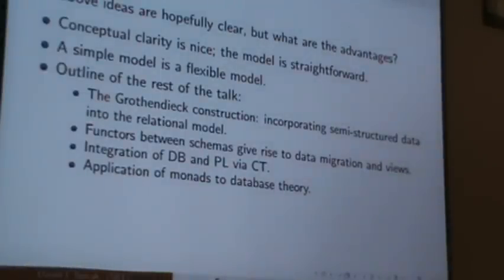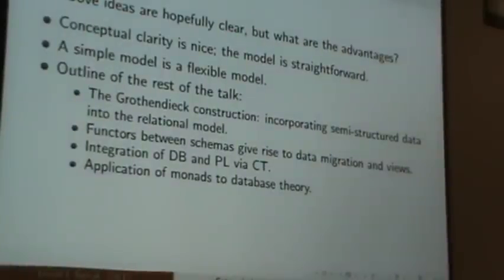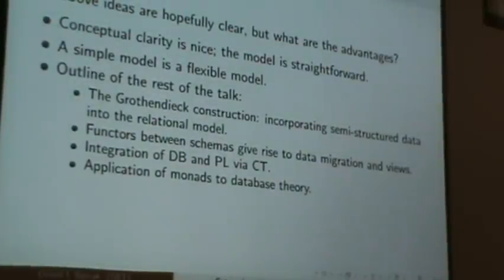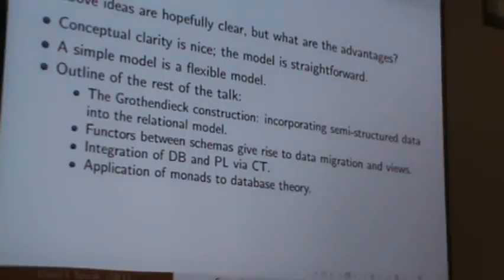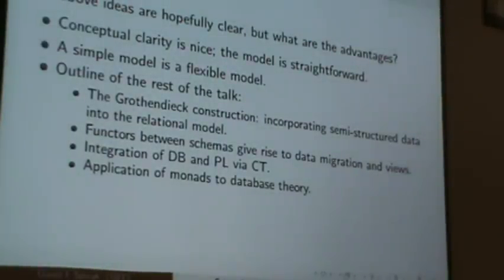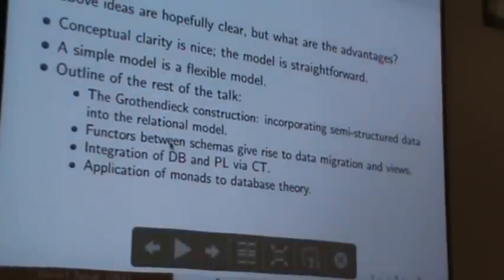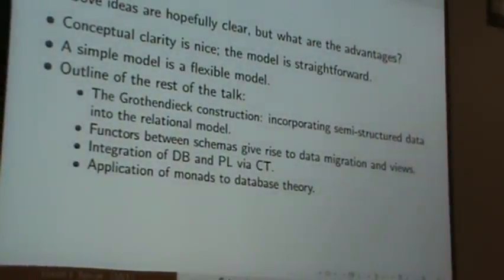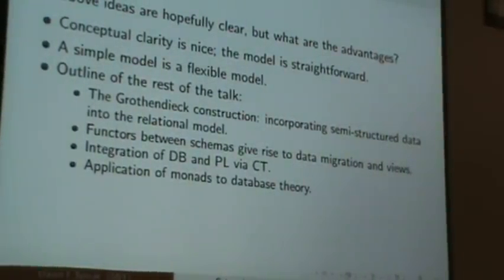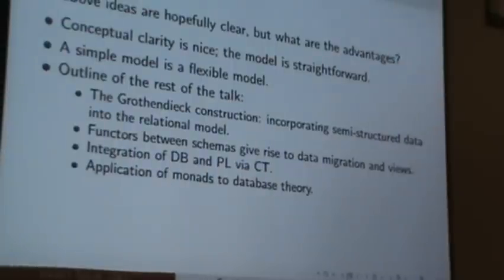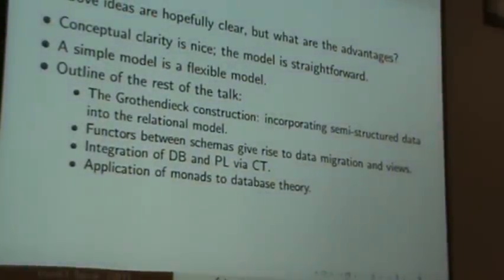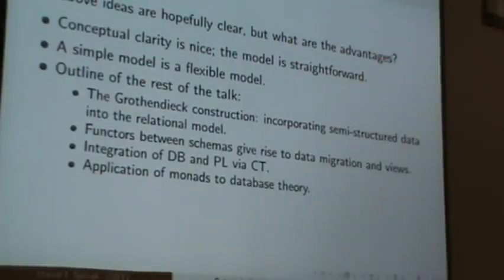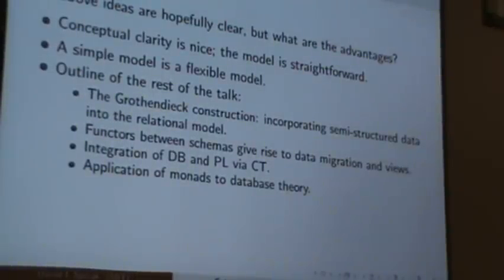Usually something that's simple is flexible, so I'm going to try to show you how it's flexible in a second. And the outline of the rest of this talk is that there's something called the Grothendieck construction, which I don't know if people know about, but it's a nice categorical construction. And it allows us to kind of switch our viewpoint from the relational type table view to a more semi-structured view, where you're allowed to have nulls and things like that, or even false things.